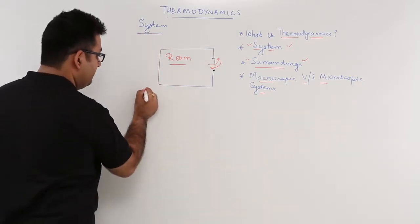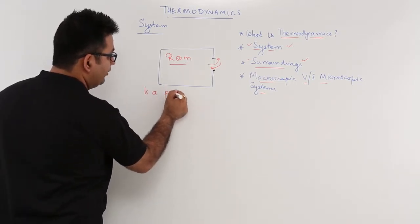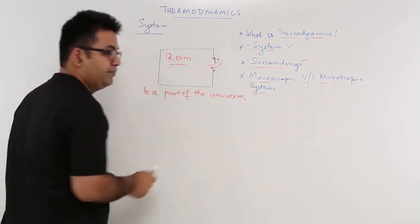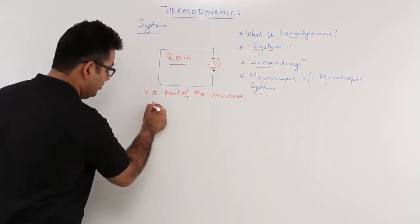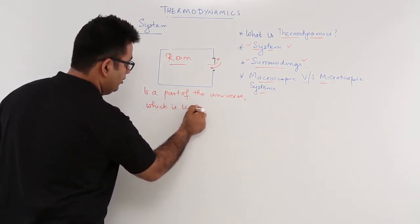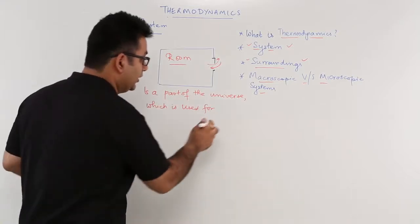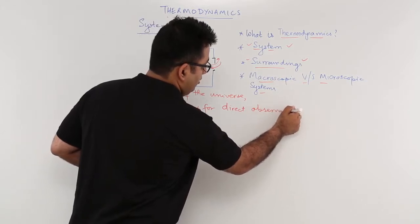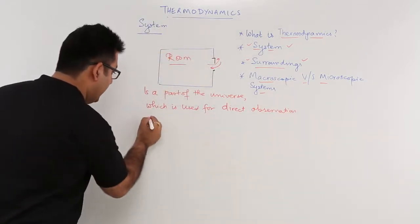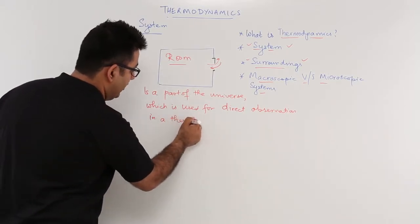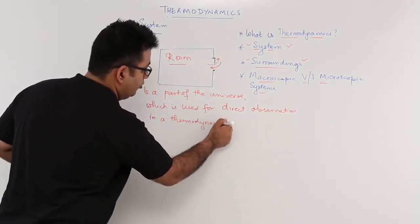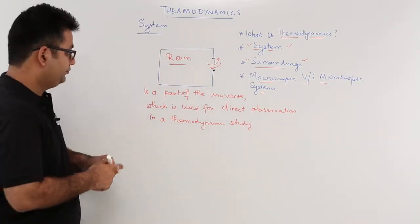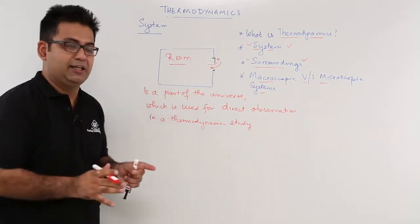In a nutshell, a system is that part of the surroundings which is used for direct thermodynamic observation. So let us write this: a system is a part of the universe which is used for direct observation in a thermodynamic study.